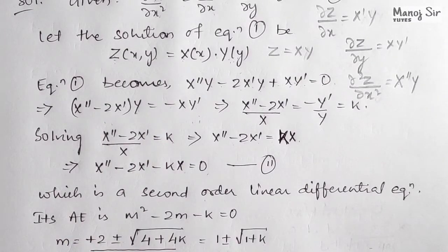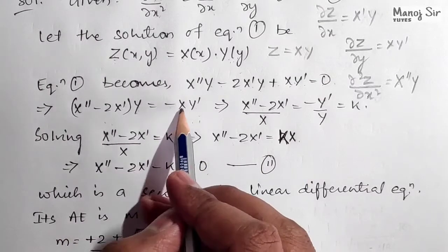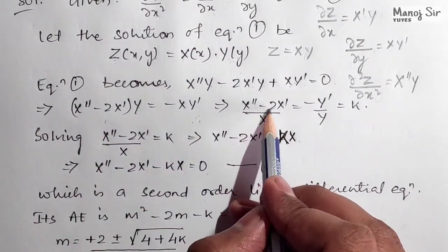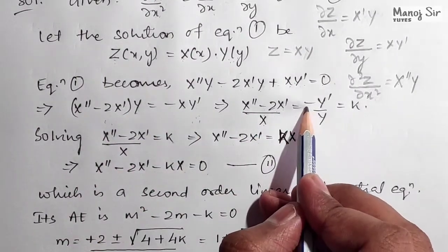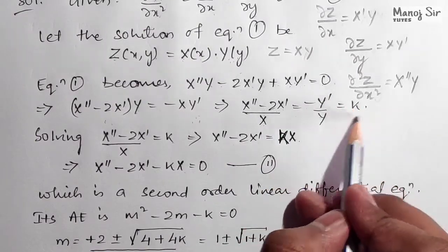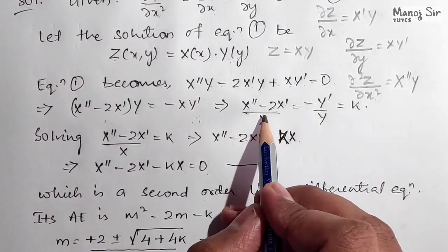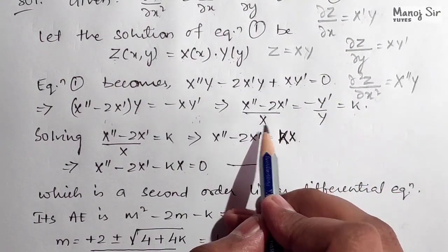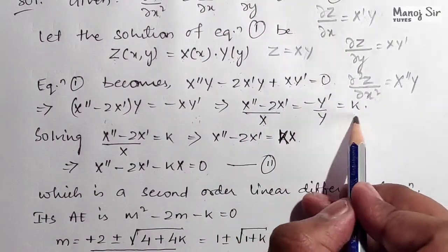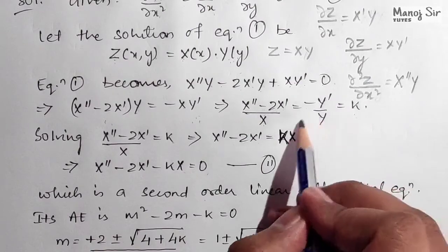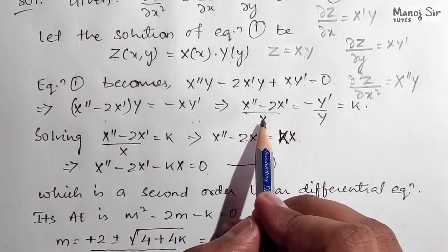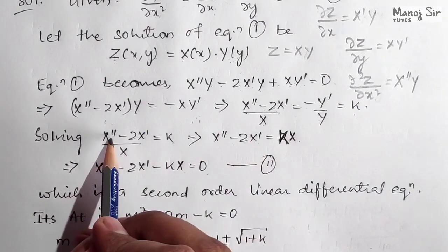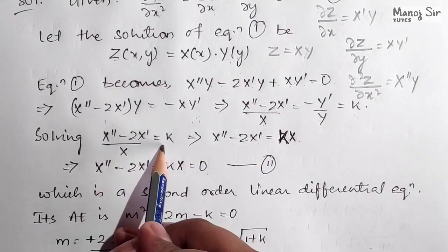Separating variables, we divide appropriately to get: (X'' minus 2X') upon X equals minus Y' upon Y equals some constant k. If we equate the left side with k we get the equation for X, and equating minus Y'/Y with k gives the equation for Y. Solving X'' minus 2X' upon X equals k gives X'' minus 2X' equals k·X.